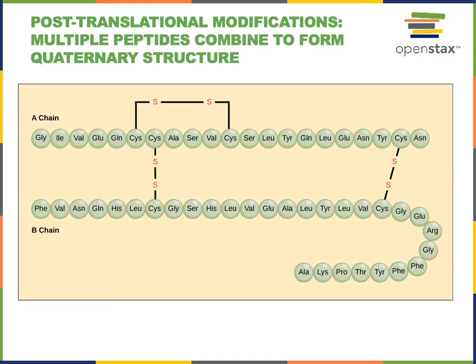Multiple polypeptides can be joined together to give a protein its quaternary structure. This quaternary structure can also be stabilized by disulfide bonds — covalent bonds between sulfur-containing amino acids like cysteine.